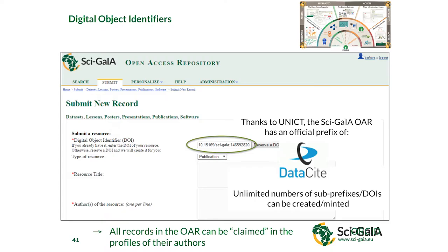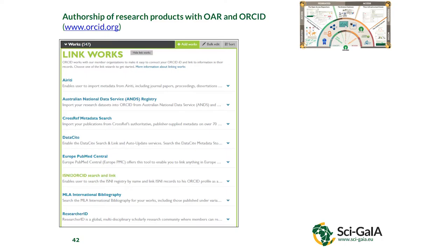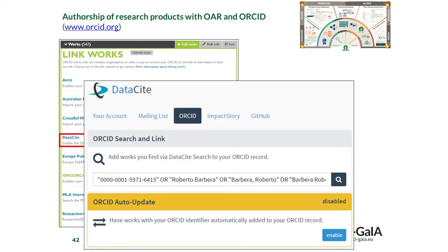All records in the ORCID can be claimed. If you go to ORCID and log in to your profile, you don't need to fill in your papers one at a time — that would be very boring. You can search and link your papers from external sources such as Crossref, ResearcherID, or Scopus. One of the external sources you can claim your research products from is DataCite. You are redirected to a page where you can put all your identities — for example, I sign papers as Roberto Barbera, Barbera Roberto, or just Barbera.